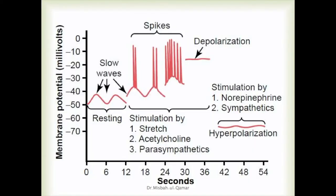Changes also take place in the voltage of the resting membrane potential in addition to slow waves and spike potentials, meaning the baseline voltage level of smooth muscle resting membrane potential can also change. Under normal conditions, the resting membrane potential averages about minus 56 millivolts, but multiple factors can change this level. When the resting membrane potential becomes less negative, it is called depolarization, and the muscle becomes more excitable. When it becomes more negative, it is called hyperpolarization, making the muscle less excitable.